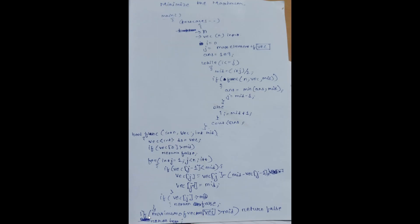After this for loop ends, we keep a condition: if the maximum of the vector is greater than mid, then we simply return false. Else, we return true. That's it. If it returns true, then j equals mid minus 1 will be done. Else, if it returns false, then i equals mid plus 1, and we will finally get our answer.